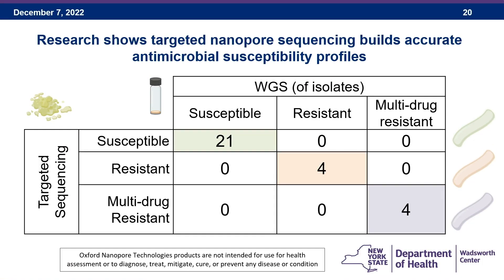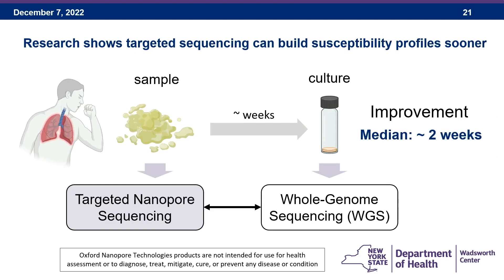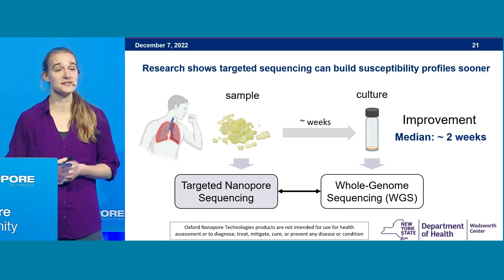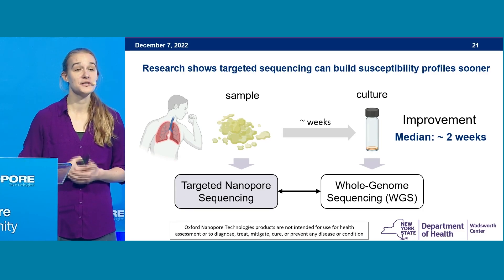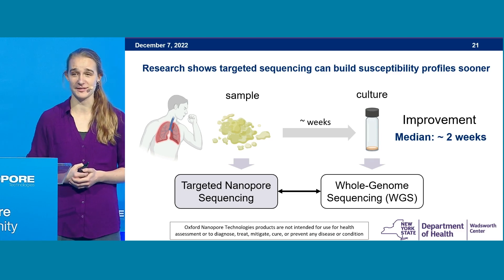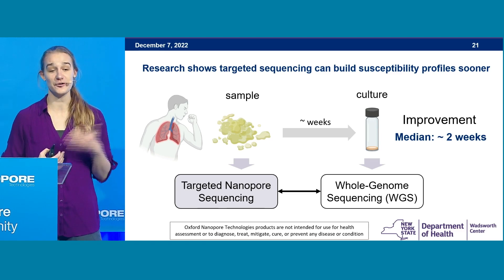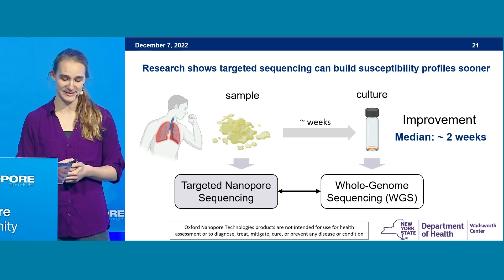Since then, we have sampled many more — both primary samples, isolates, and things actively coming into our lab as we gear up for implementation. This proves to be a much earlier detection method. What we've seen so far in our studies is that we can get this targeted nanopore sequencing result two weeks before whole genome sequencing results are available. That's a significant improvement in our ability to early-detect drug-resistant strains.